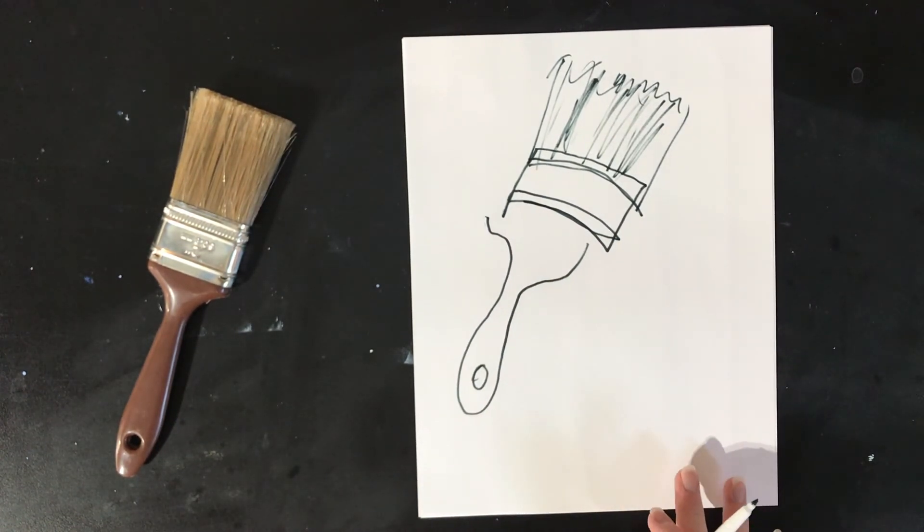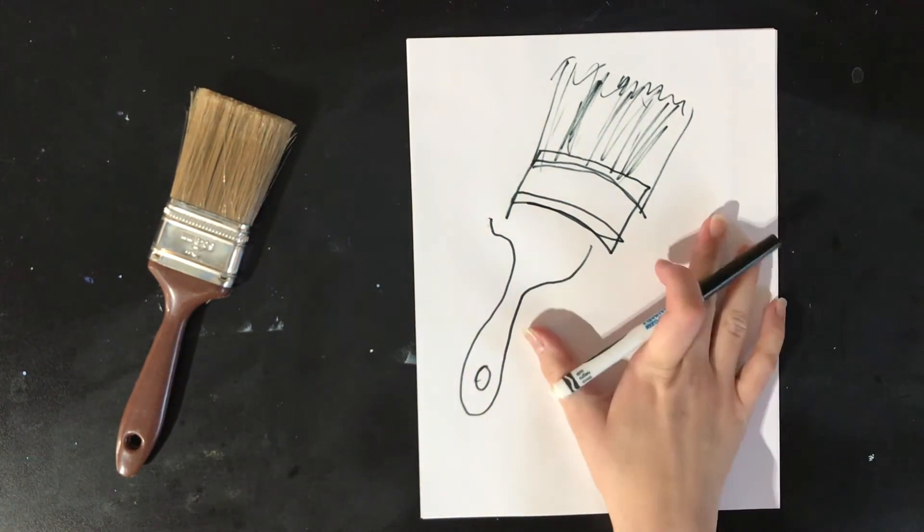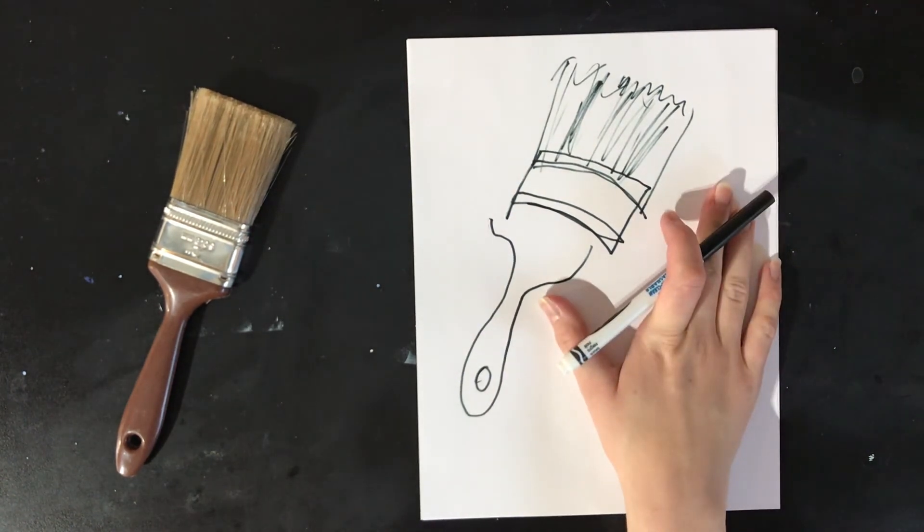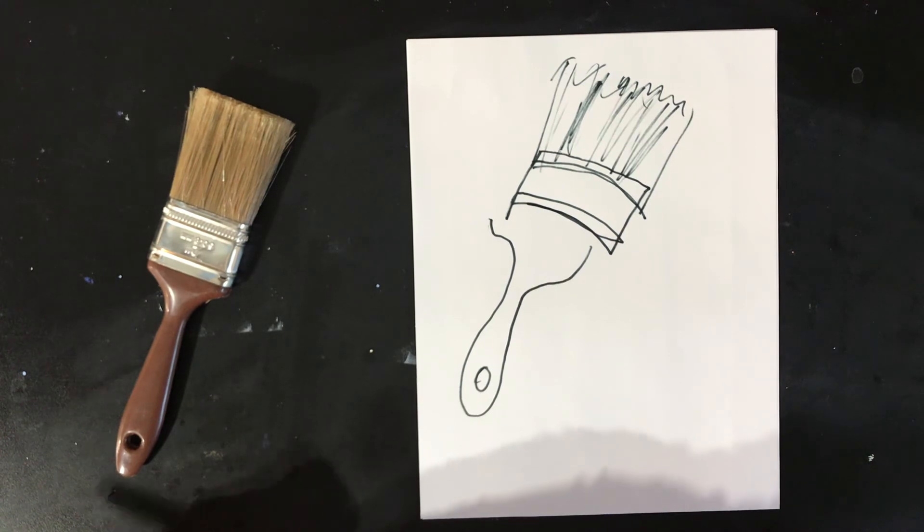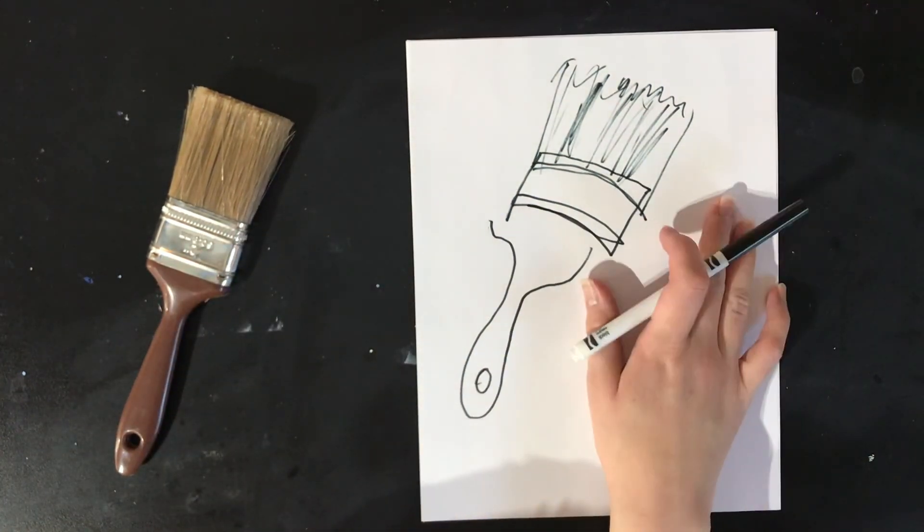And there you have it. I just did a blind contour drawing of a paint brush. So you can draw anything you want. The main part of this exercise is don't look at your paper, accept that it's going to look silly and kind of crazy, and just look at the object you're drawing to train yourself to look at the object you're drawing more than looking at your paper.